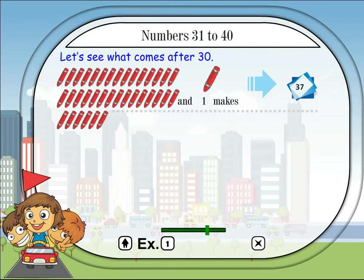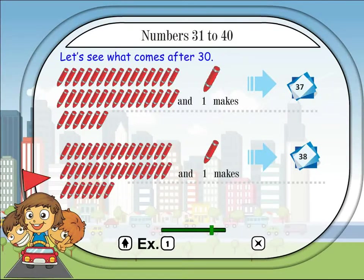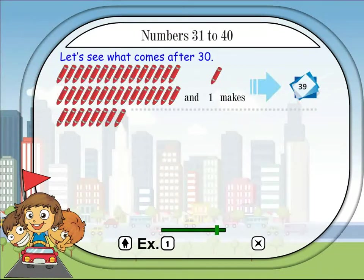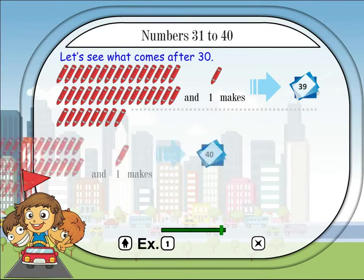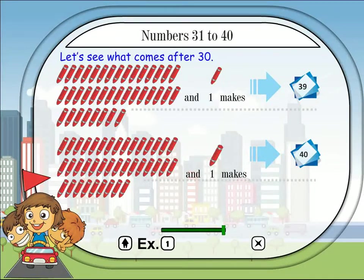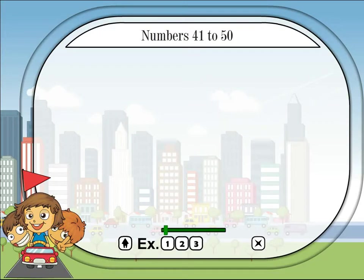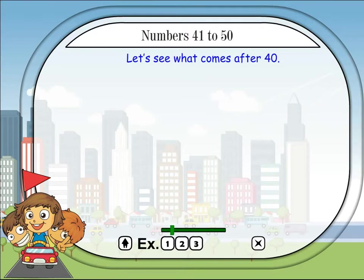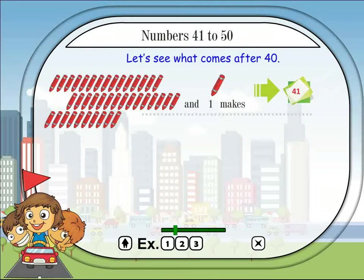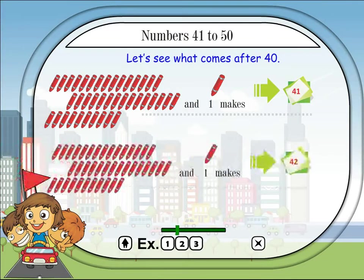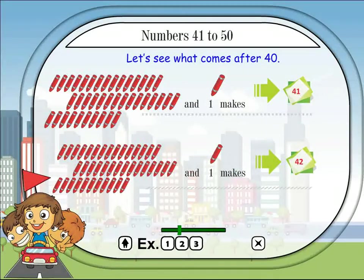34 and 1 makes 35. 35 and 1 makes 36. 36 and 1 makes 37. 37 and 1 makes 38. 38 and 1 makes 39. 39 and 1 makes 40.